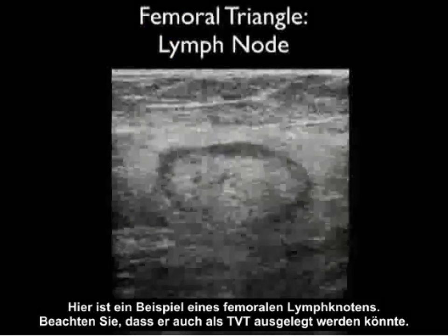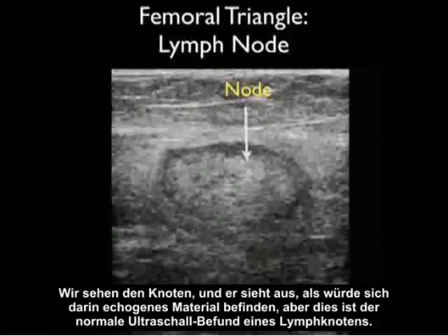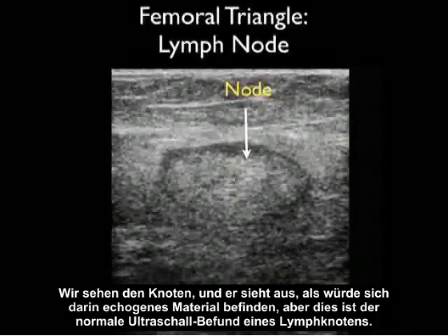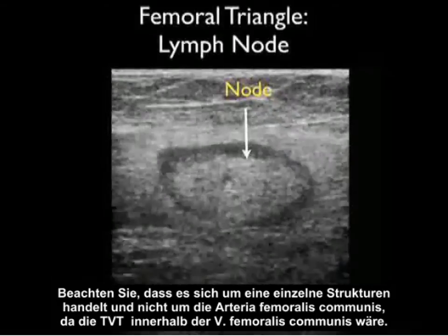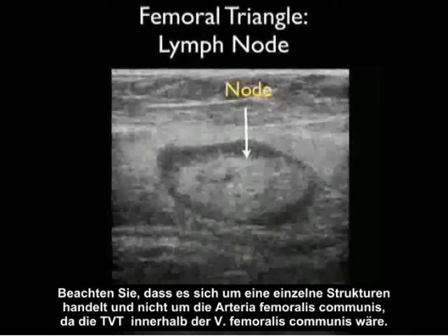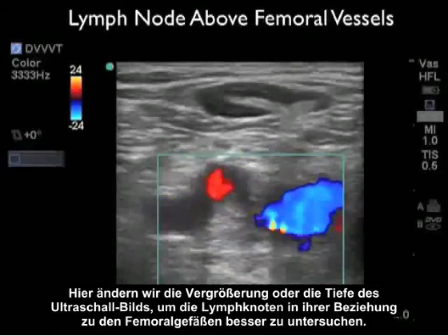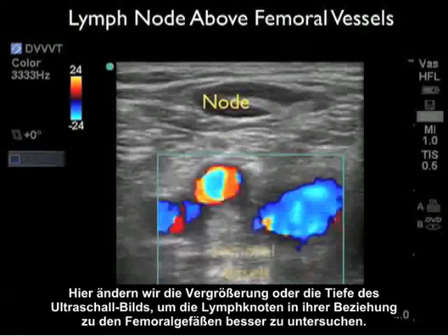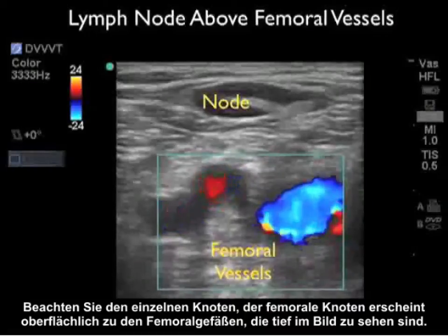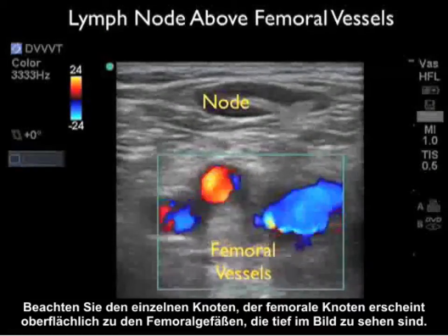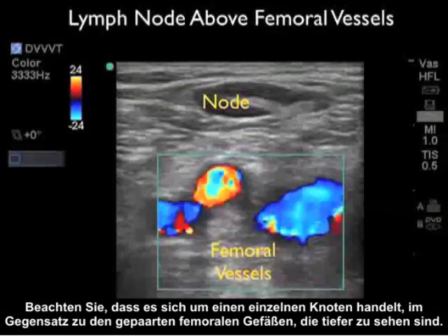Here's an example of a femoral lymph node. Notice that it has the appearance of what could be construed as a DVT — we see the node and it looks like it has echogenic material within it, but this is the normal ultrasound finding of a lymph node. Notice that it's a single structure and not related to the common femoral artery as a DVT would be within the common femoral vein. Changing the magnification or depth of the image to better investigate the lymph node in its relation to the femoral vessels, note the single node appears superficial to the femoral vessels seen deep within the image, in contrast to the paired femoral vessels seen deeper.